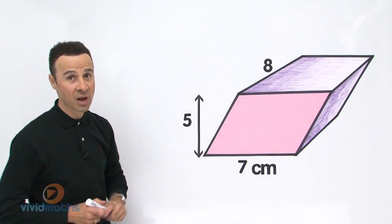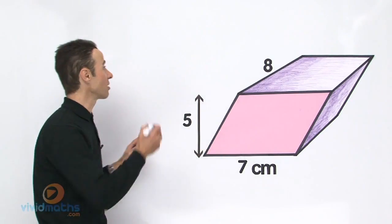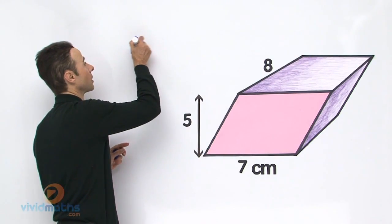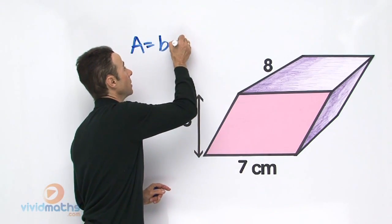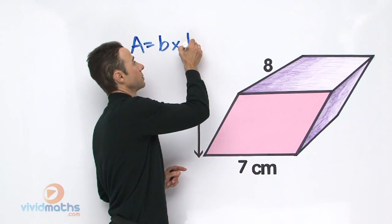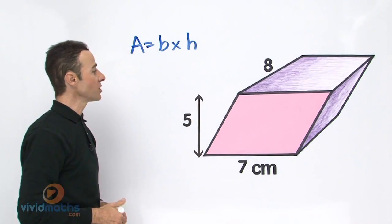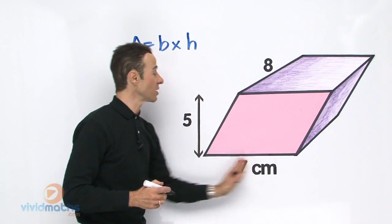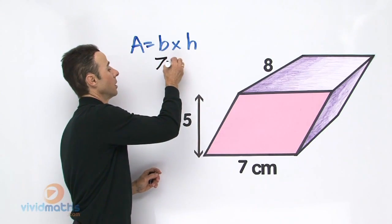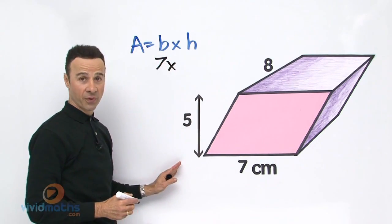Now first of all let's write out the formula for the area of this pink face. So that is going to be base times height, so that is the area there. So let's plug and play with the numbers here. So we have a base of 7 centimeters times the height of 5.